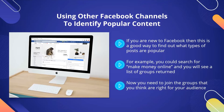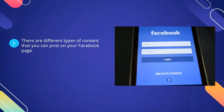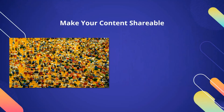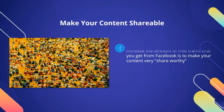In the next video, we will discuss the types of content that really drive free traffic from Facebook. There are different types of content that you can post on your Facebook page. In this video, we will look at four types of content that usually get good results in terms of engagement. We recommend that you create a posting schedule and plan in advance so that you post regularly. Once your followers know, like, and trust you, they will expect consistent posting. Make your content shareable. One way that you will definitely increase the amount of free traffic that you get from Facebook is to make your content very share-worthy. Not every post that you make is going to get a lot of shares, but keep this in mind when you are making all of your posts. You want as many of your followers to share your content with their friends.